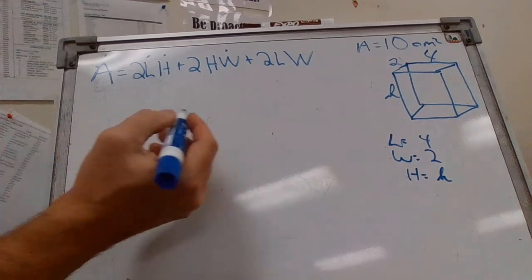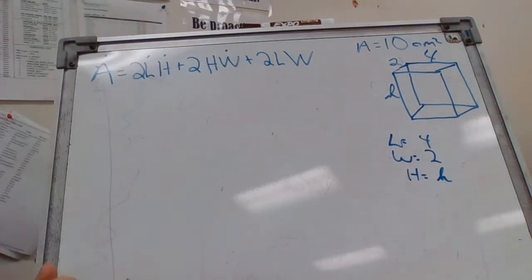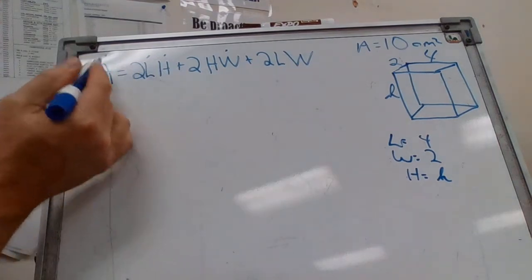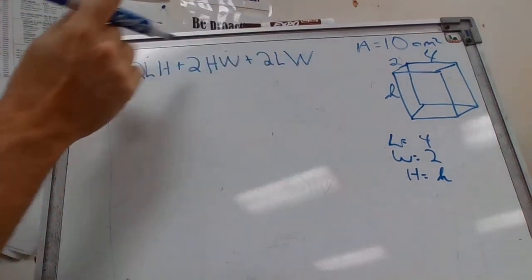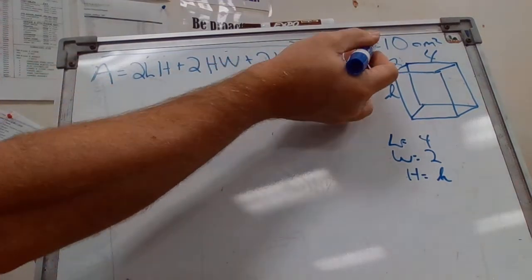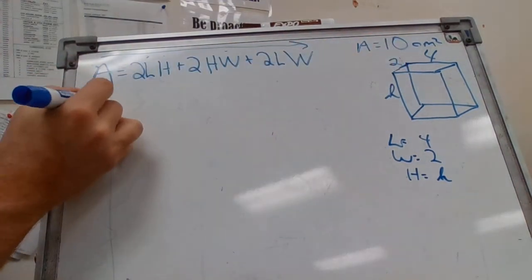Alright, so first step, formula is already up there, we want to substitute. We'll go from left to right just like you're reading in math, start here, go that way. First variable is A, so it tells us what A is, so we're just gonna substitute that.